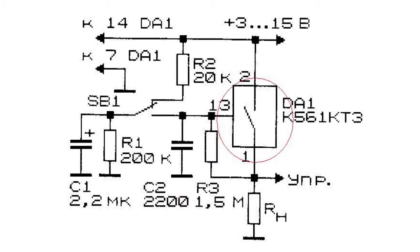C1 capacitor is charged to supply voltage on the device through the normally closed contact of the SB1 button. Pressing the button for a short period of time connects capacitor C1 to control electrode 13 on the microchip, and the switch channel is activated.